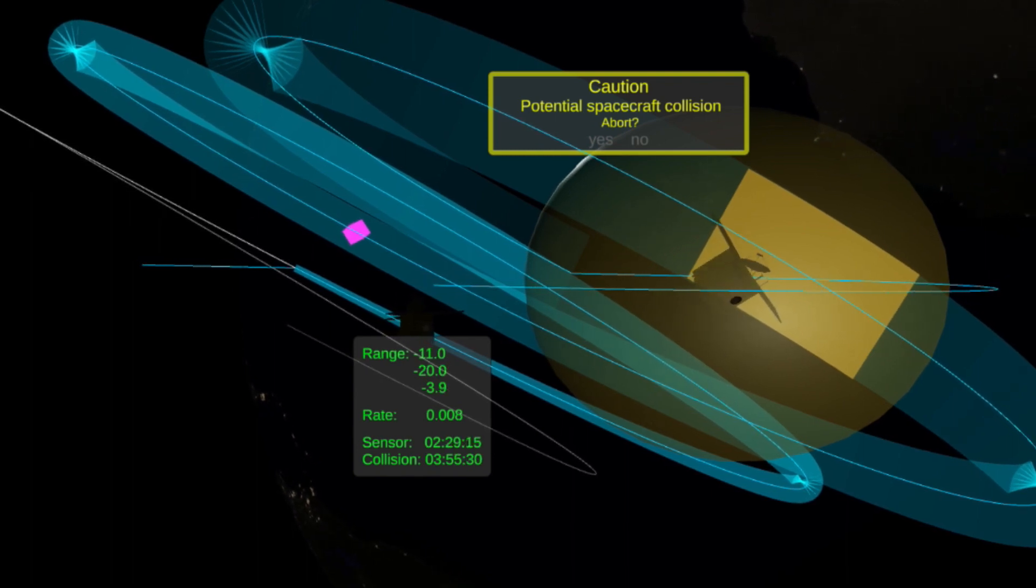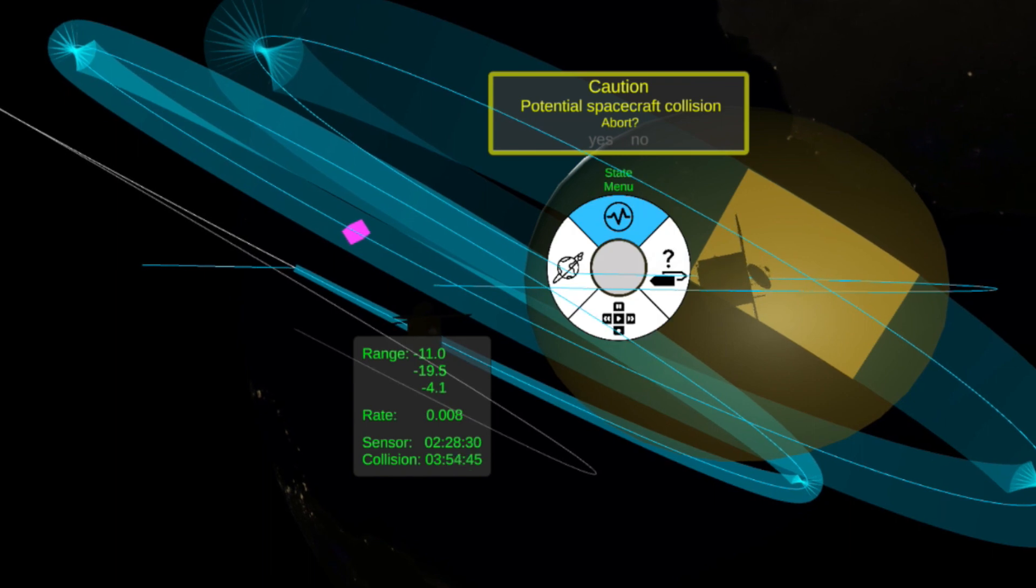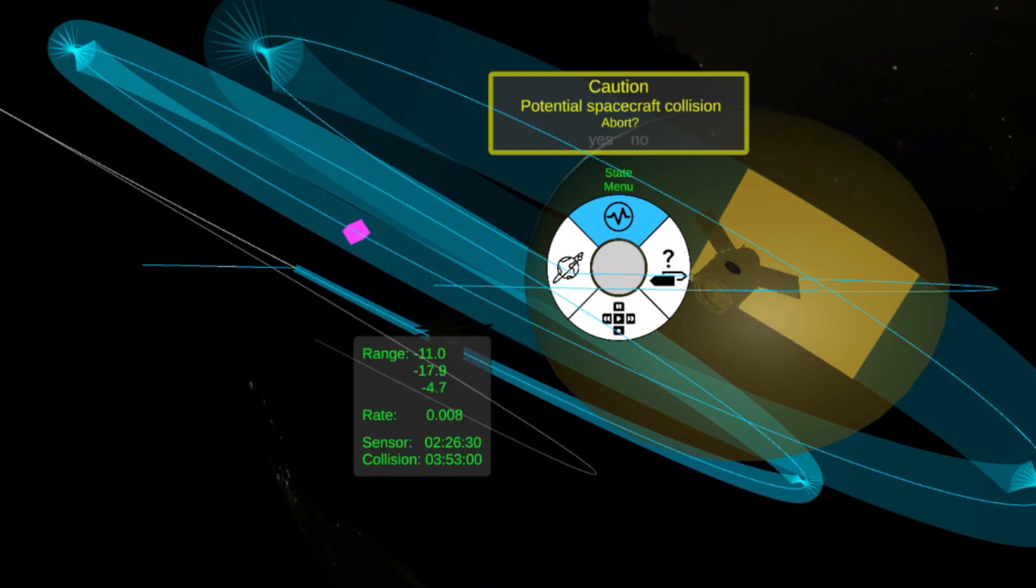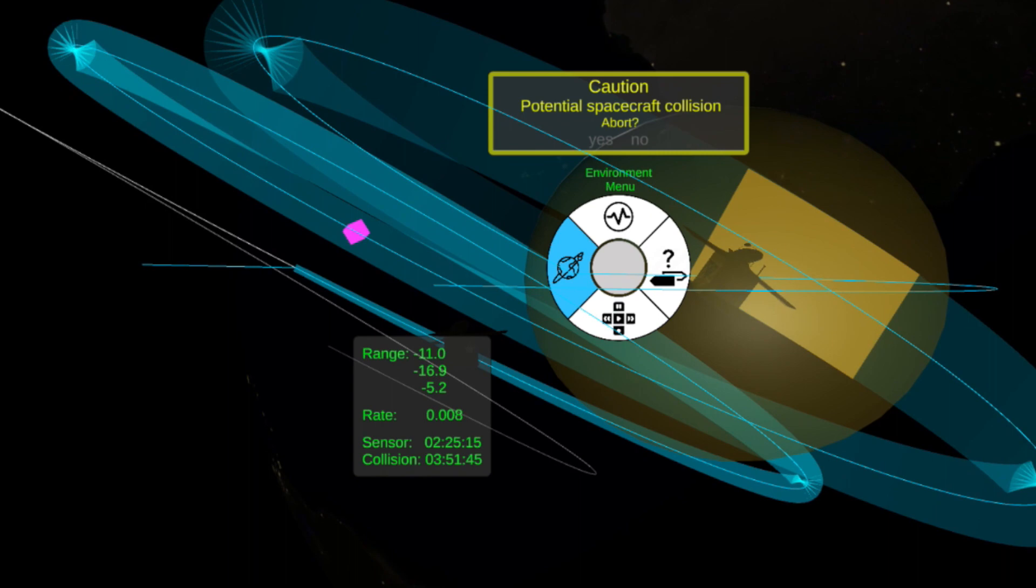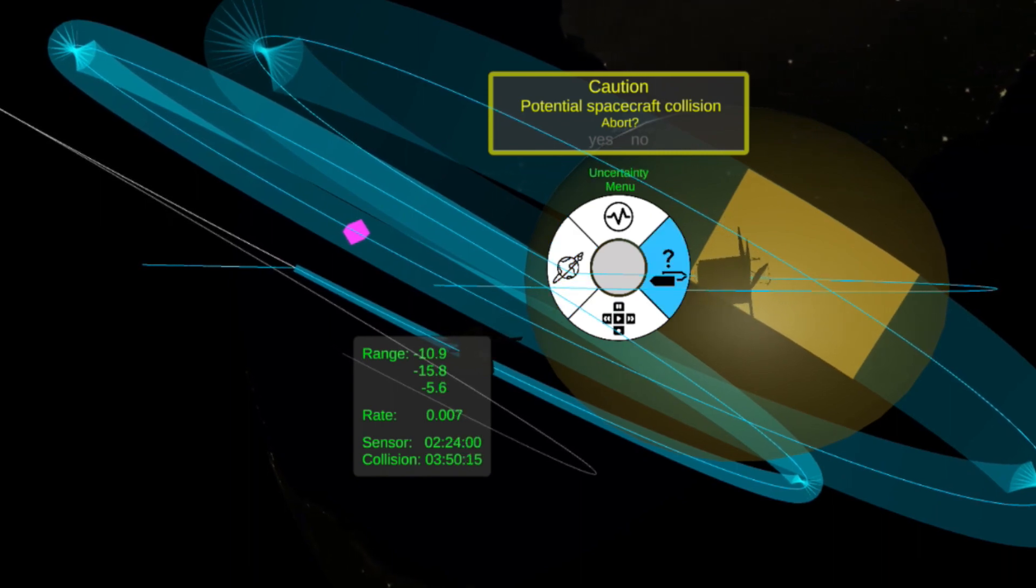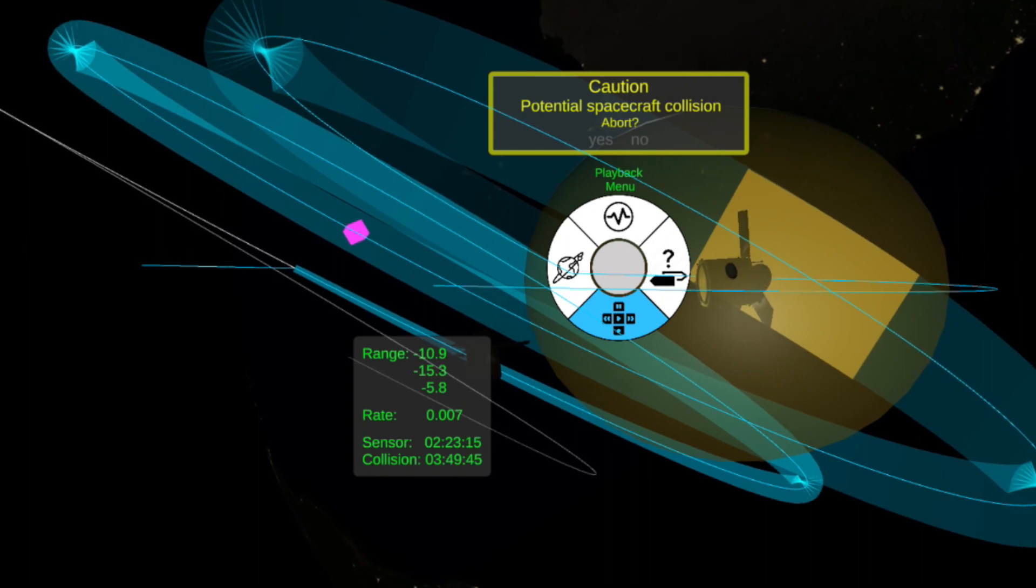The operator has the ability to customize the display to turn on or off information as needed or bring up new pieces of information. In a menu system, they can toggle information about the states of the satellites, the environment, things being visualized, as well as different uncertainties. And then they can also change the playback controls.